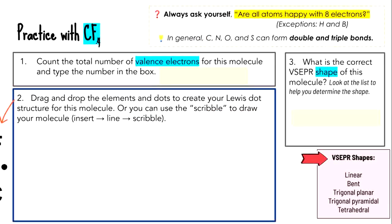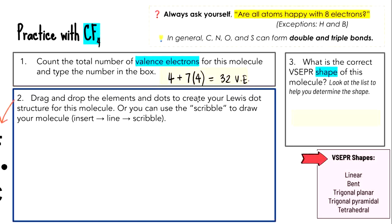Let's draw the Lewis dot diagram of CF4. First, count the total number of valence electrons. Using the periodic table: carbon has four valence electrons, and fluorine has seven. But there are four fluorines, so that's 28 from fluorine. 28 plus 4 gives us 32 valence electrons total — that's what we have to work with as we draw our molecule.